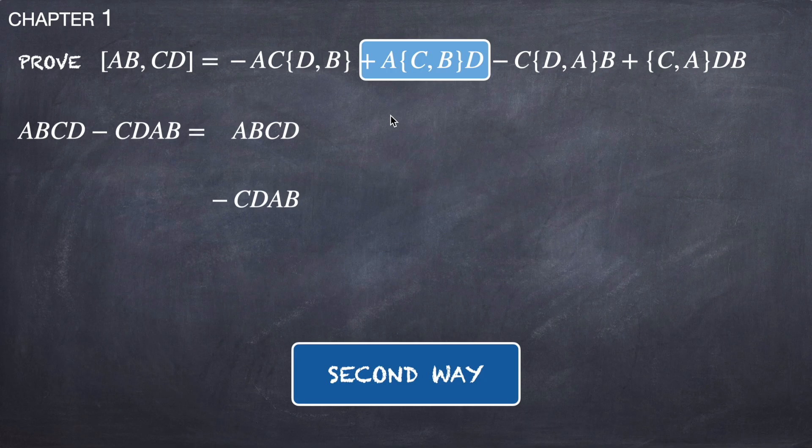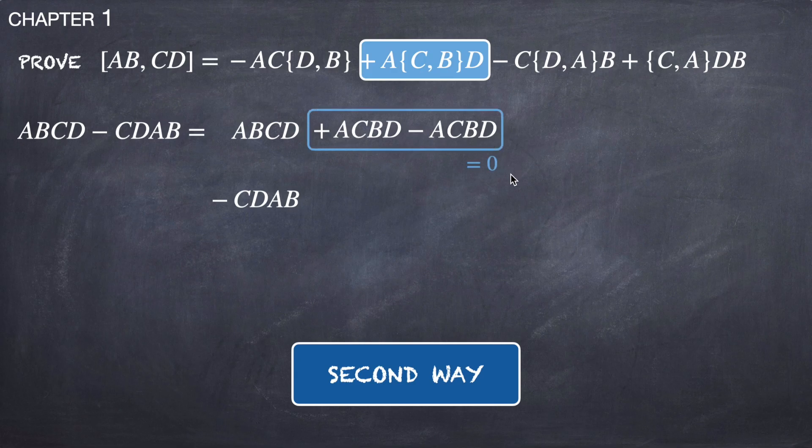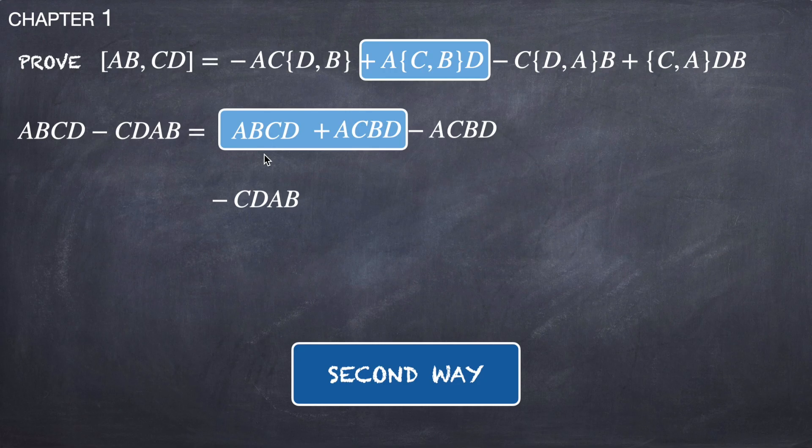But since we are going to add ACBD, we need to subtract it as well, in such a way that these two terms sum to zero. But if you consider these two terms, then they are exactly this term here in blue: A{C,B}D plus ABCD.